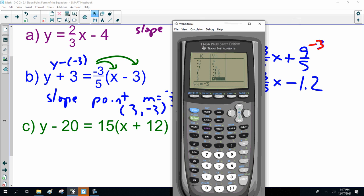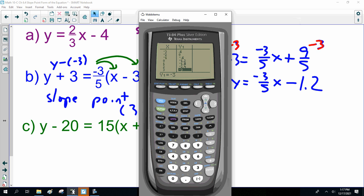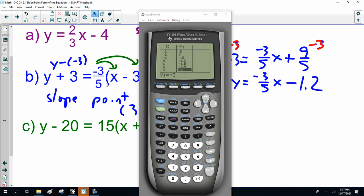So, this slope-intercept form, y equals minus 3/5 x minus 1.2, has the same slope and goes to the same point as the slope-point form, they're the same graph.